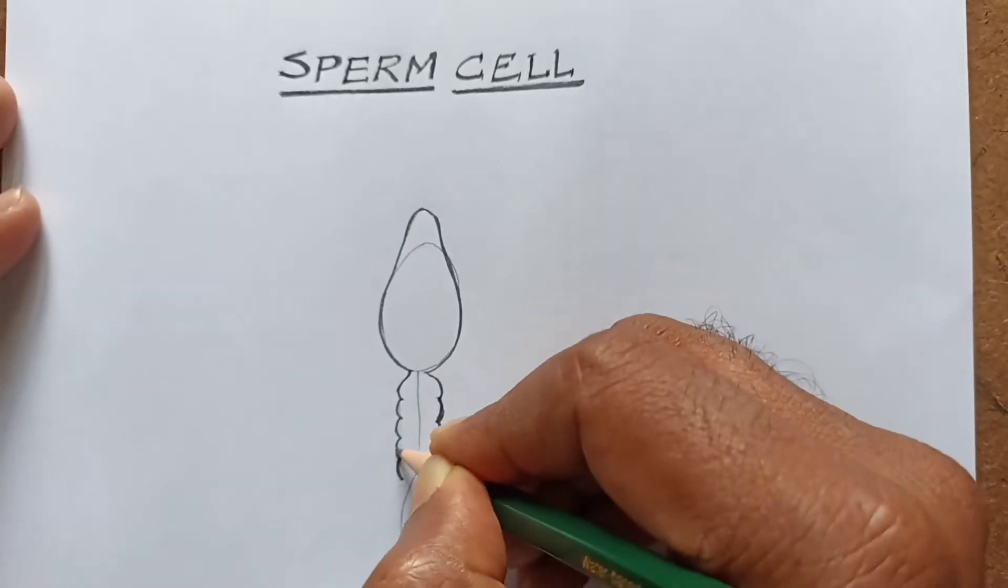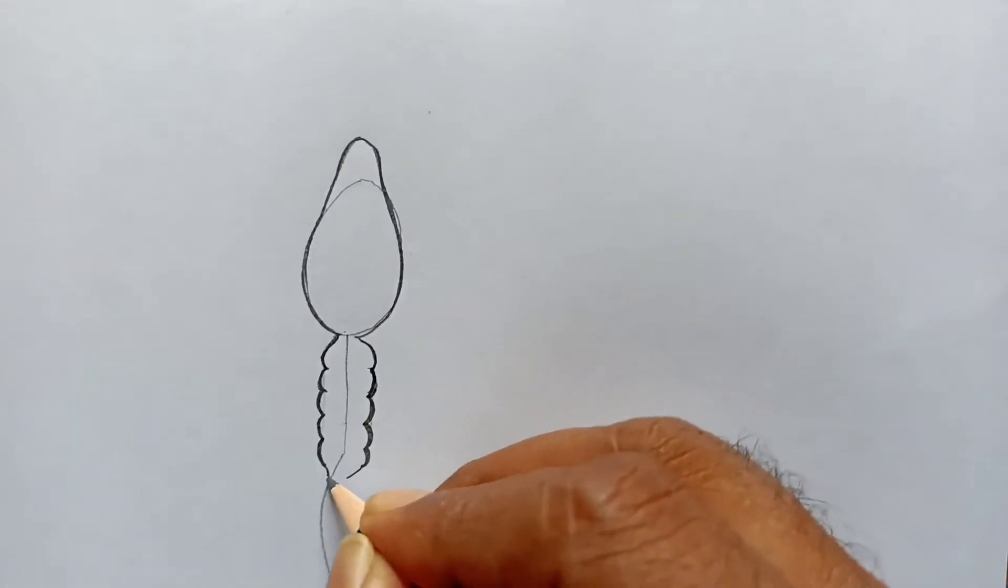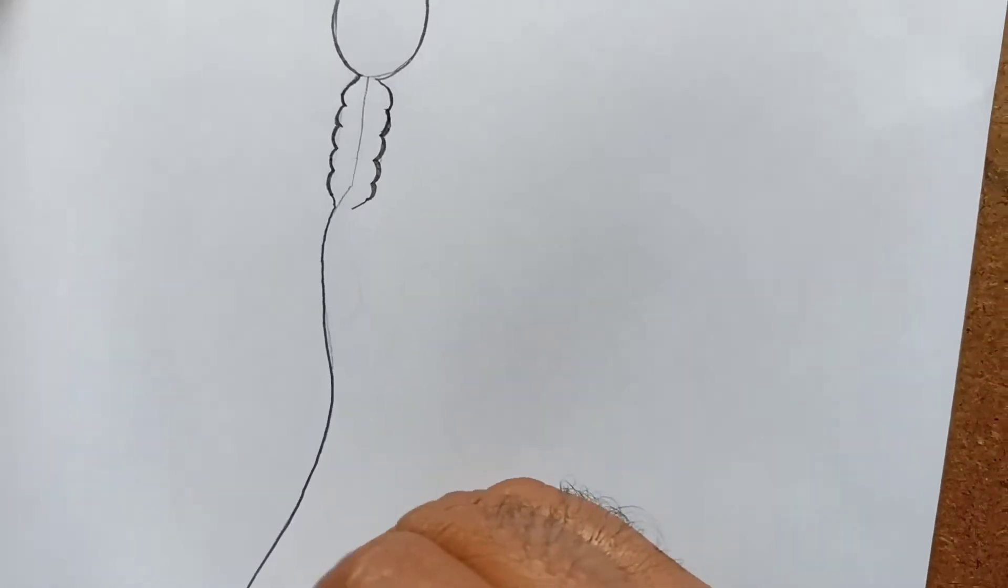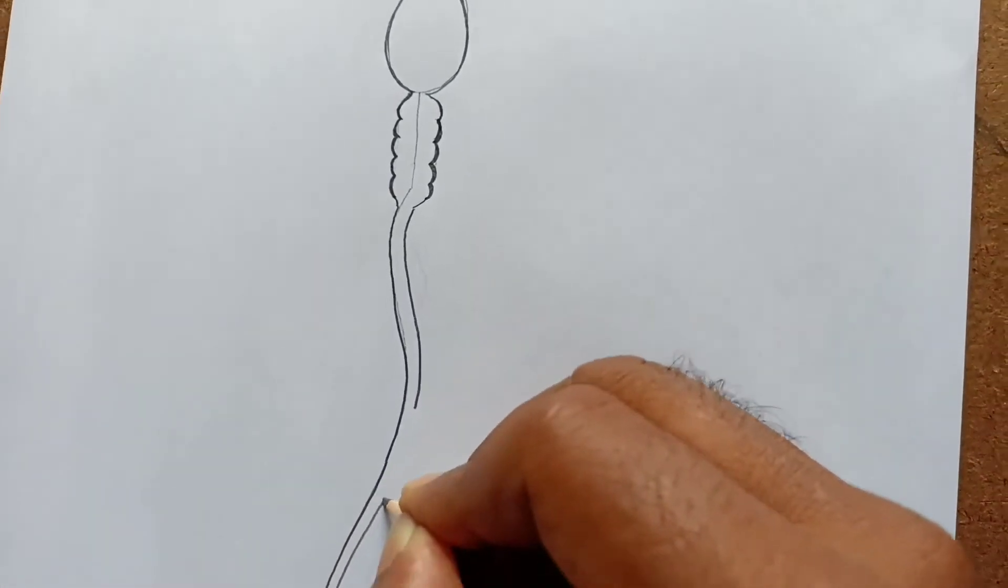This is the middle piece. It contains the mitochondria. Now I am drawing the tail. This tail helps to move the sperm towards the egg cell.